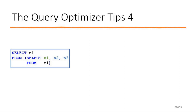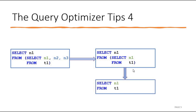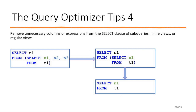Let's see another example. I have seen many queries in production where people fetch columns n1, n2, n3 from table t1 but then on top of that they use just a single column. We should only use the columns that are required. We can write SELECT n1 FROM t1, and we can further improve this by removing the inner query entirely and just using SELECT n1 FROM t1. This reduces unnecessary columns or expressions from the SELECT clause, subquery, inline view, or regular view.